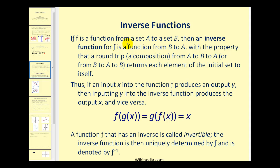If f is a function from a set A to a set B, then an inverse function of f is a function from B to A, with the property that a round trip — a composition from A to B to A — returns each element of the initial set to itself. This means f of g of x equals g of f of x, which equals x. A function that has an inverse is called invertible, and the inverse is denoted by inverse function notation. Be careful — this looks similar to exponential notation, but it is inverse notation for function f.